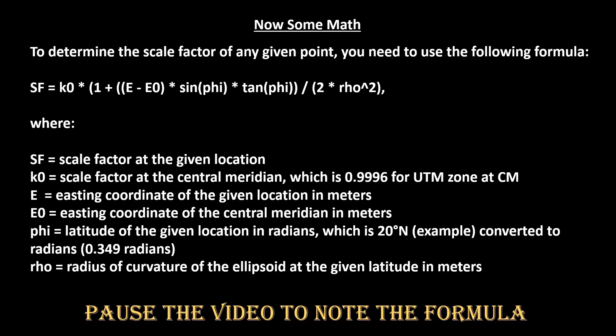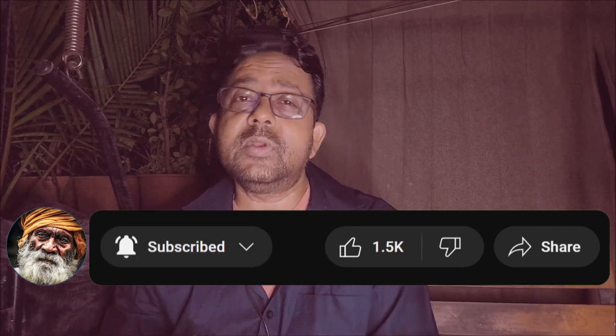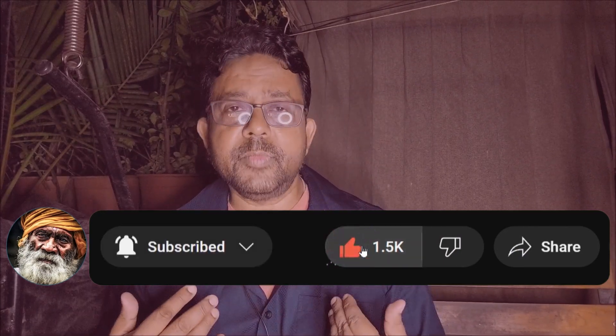Let's now look at a formula by which we can determine the point scale factor of any given point. To determine the scale factor at 20 degrees north and 73 degrees east, you need to use the following formula. That was a long formula — I'll have it in the description for easy reference if you ever need it. I am thankful that we have software that can calculate the scale factor. I hope this video was informative and helpful. If you have any questions or comments, please don't hesitate to write them below. Thanks for watching and I will see you in the next video.